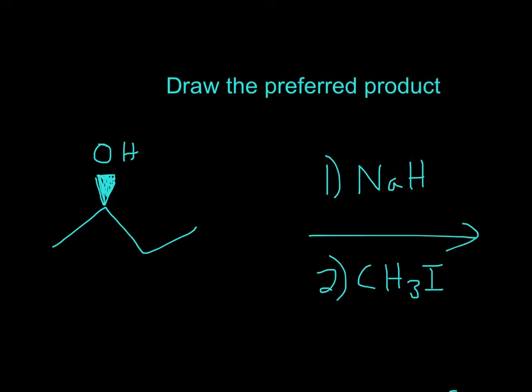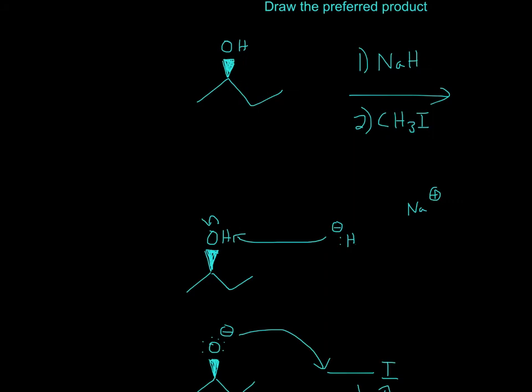And what hydrides like to do is steal other hydrogens. So this hydride comes by and steals this hydrogen, and then gives the electrons to the oxygen. So therefore, the hydride will come by, steal the hydrogen, give it to the oxygen.